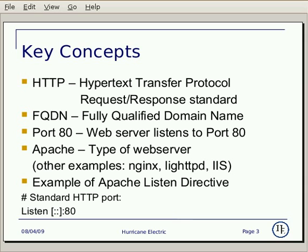Let's go over the key concepts. HTTP stands for Hypertext Transfer Protocol, used mainly to access data on the internet. FQDN stands for Fully Qualified Domain Name — examples include he.net, google.com, or any other domain names. During the certification, you'll be asked to enter your own Fully Qualified Domain Name. A web server listens on port 80, and communication between an HTTP client and HTTP server runs on TCP port 80. Apache is a common web server type; other examples include Nginx, LightTPD, or IIS for Windows. Since Apache is the most commonly used, here is an example of the Apache Listen Directive for IPv6.